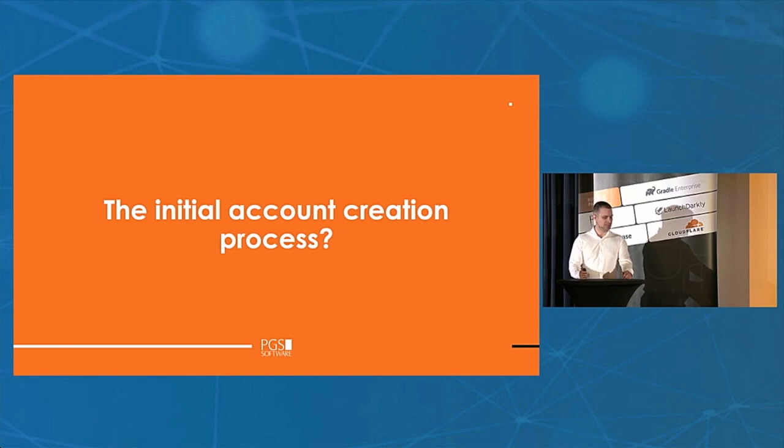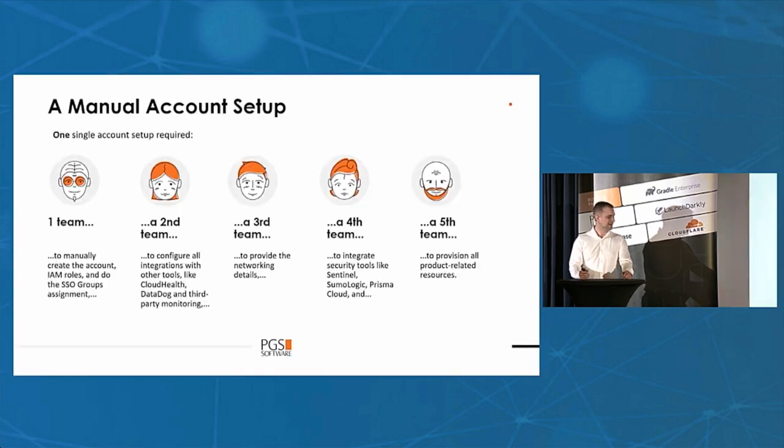So how did the initial creation process look like? We had five different teams required to create one single account. First there was a team managing the AWS environment, so they had to create the account. Then there was another team configuring all external tools for monitoring, for log management. Then there was the networking department providing a CIDR and configuring VPC and maybe some tunnels. Then we had the security team handling all integrations with security tools like Prisma or Sentinel. And then finally the product team creating resources for the product.